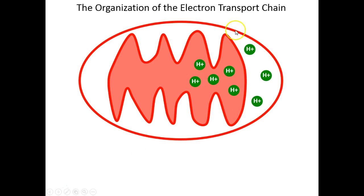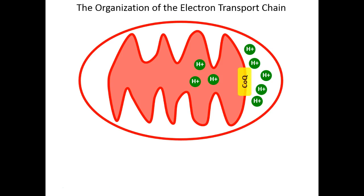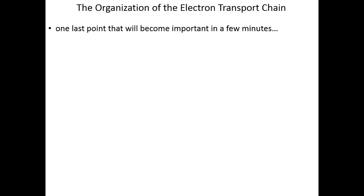Here are our protons. We are trying to create a proton gradient where there are more protons out in the inner mitochondrial space than in the matrix. When FMNH2 gives up its electrons to the iron-sulfur clusters, the iron-sulfur clusters do not accept the protons. So those two protons from FMN get pumped across the inner mitochondrial membrane, establishing a gradient. Then CoQ accepts those electrons from the iron-sulfur clusters — and since CoQ can carry protons, it takes them from the mitochondrial matrix, enhancing the concentration gradient further.